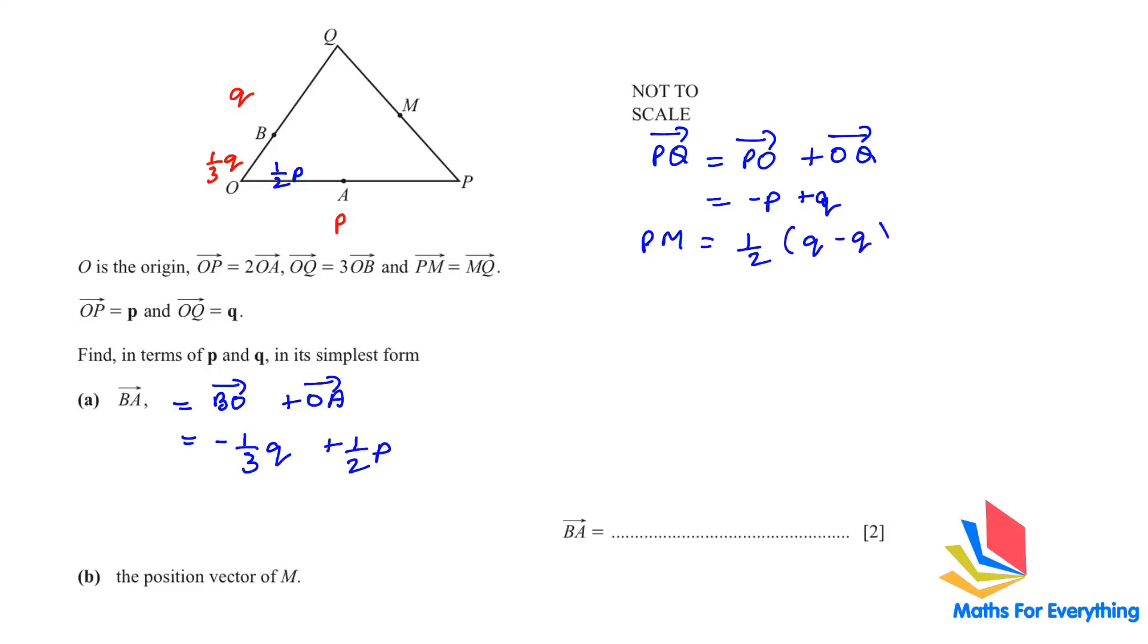I'll just put the positive in the front. And now to find the position vector which is OM. We can pass through vector OP plus PM. OP is p and PM is, oh, I wrote here by mistake PQ. It's q minus p. So, half q minus p. We are going to expand the bracket. p minus half p will give us half p plus half q. So, the position vector of m is half p plus half q.